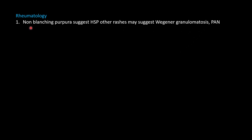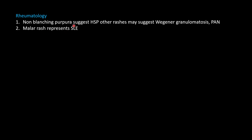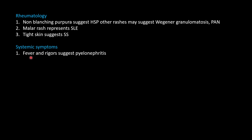Rheumatological features are important: non-blanching purpura suggests HSP, while other rashes should raise suspicion for Wegener's and polyarteritis nodosa. A malar rash suggests SLE, which causes lupus nephritis. Telangiectasia can suggest systemic sclerosis.